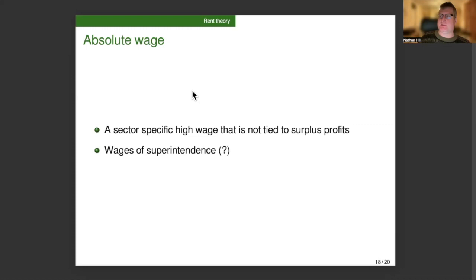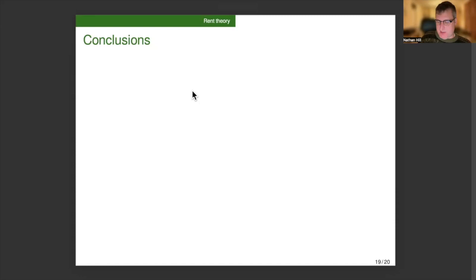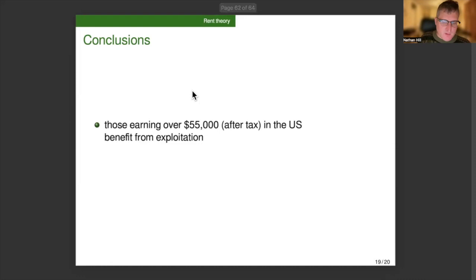So that was my application of rent theory to wage determination. Now I'll just offer a conclusion that may not seem like a summing up, but in some ways it was the starting point for me to think about this whole question, that those who earn over $55,000 after tax in the U.S. in the year 2021 were benefiting from exploitation. So that's the number that you get by looking at the GDP and discounting for investment and then making it GDP per capita. That is the amount of added value that each worker puts in the economy. That's the monetary expression of labor time for a year. So any employee who's paid over that is somehow benefiting from the unpaid labor of other employees in the economy.